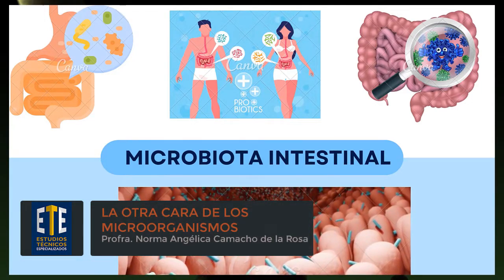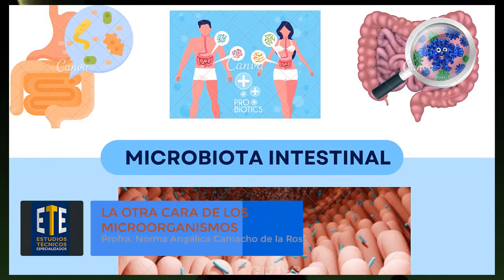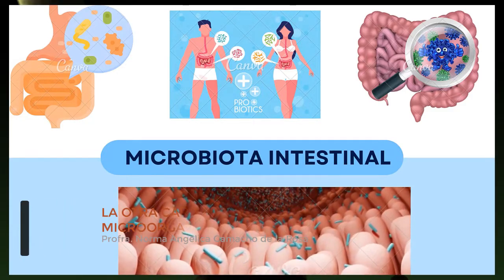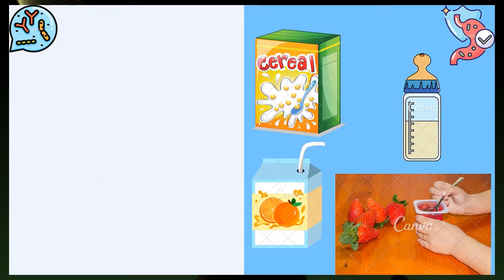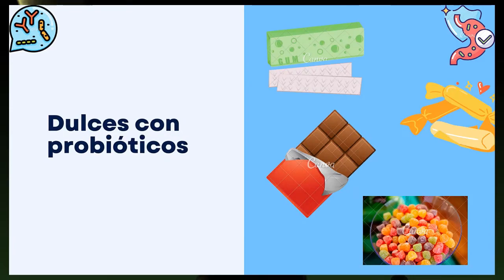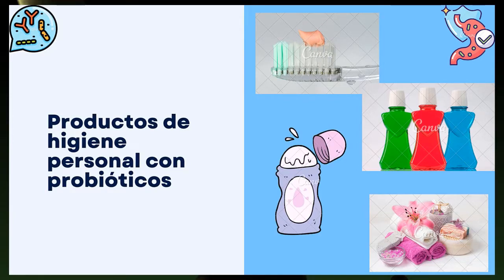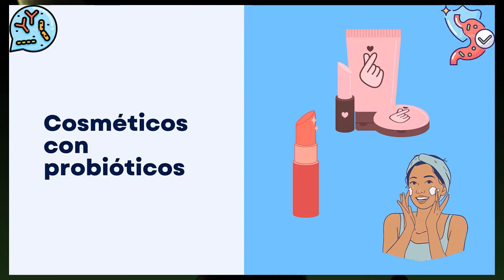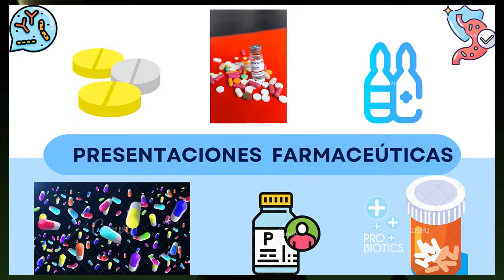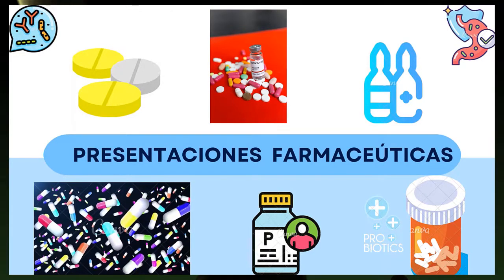La diferencia entre los probióticos naturales y los artificiales es que los primeros se desarrollan mediante un proceso de fermentación natural y los segundos se adicionan de manera intencional. En México se comercializan diversos productos probióticos, entre ellos alimentos como fórmulas infantiles, cereales para bebé, cereales para el desayuno, gelatinas, jugos y néctares. También productos de confitería como goma de mascar, gomitas, pastillas masticables saborizadas, chocolates y otros snacks. Además, productos de higiene personal como pasta de dientes, enjuagues bucales, desodorantes y jabón de tocador, y cosméticos como bálsamo labial, cremas corporales y cremas antiacné. Dentro de las presentaciones farmacéuticas se encuentran comprimidos, cápsulas, ampolletas orales, sobres con polvo, perlas, supositorios y óvulos.